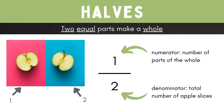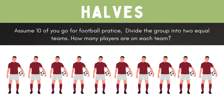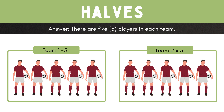Let's take another example. Assume Uncle Femi is taking ten of you for football practice and the coach divides the group into two equal teams. How many players are on each team? Answer: there are five players on each team. Team one has five players and team two has five players. The team is divided into two halves.